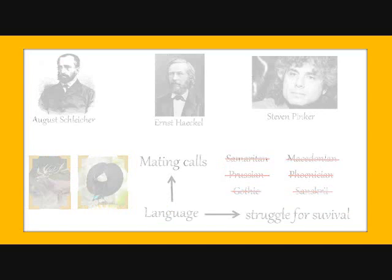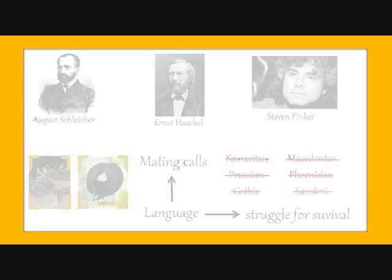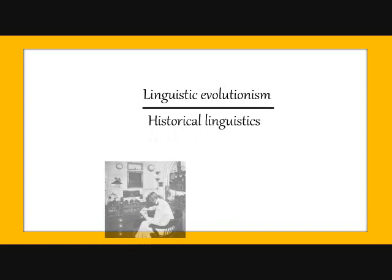Evolutionism bases on historical linguistics, or diachronic linguistics, which means no more no less than the study of those dead languages and comparing them to more modern ones, checking their possible interaction, differences and similarities, and this way studying their evolution in time.